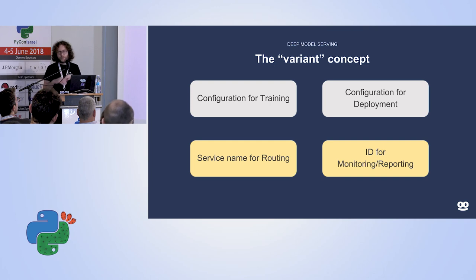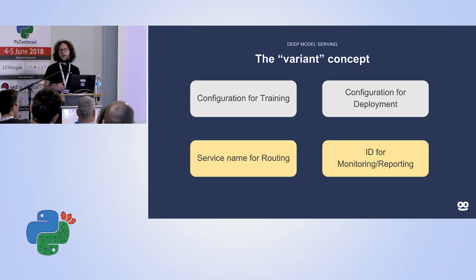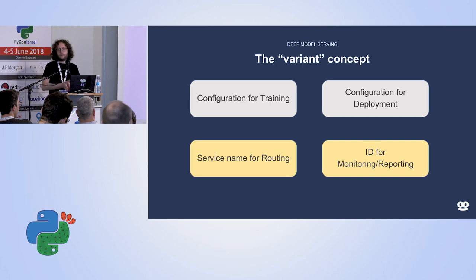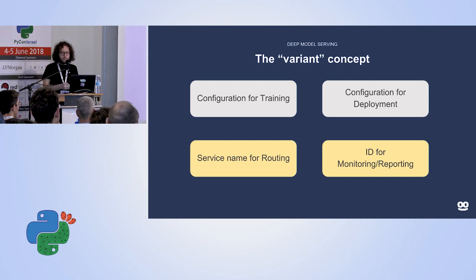One thing we do — and I think it's more general than our specific system — is we think about experiments and serving systems and call them 'variants.' This gives one name to the whole thing: your training configuration, which basically defines the model, tells you how to deploy it, gives it the same name when you deploy, and is also the name used for routing. Every time you do reporting or monitoring, every field in Kibana or your graphs is keyed by this ID everywhere.